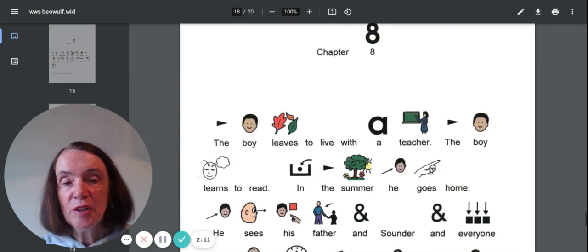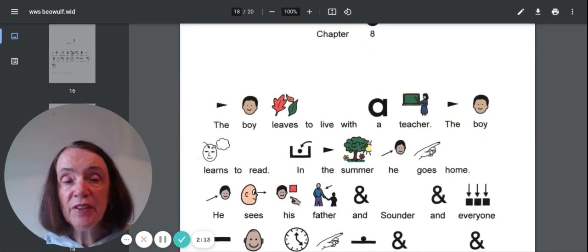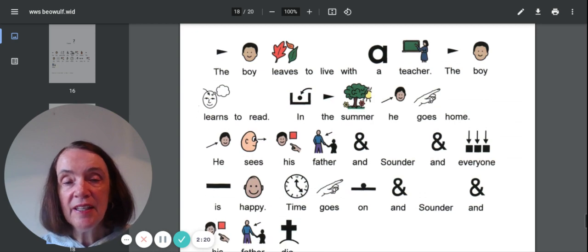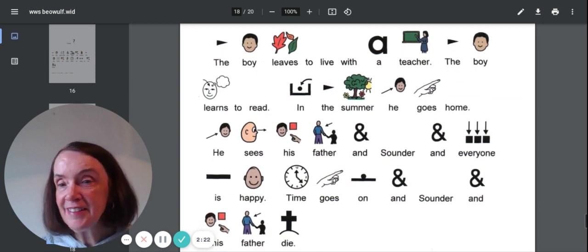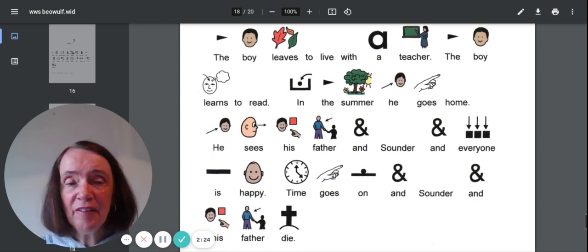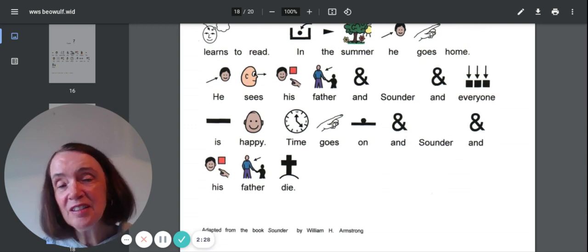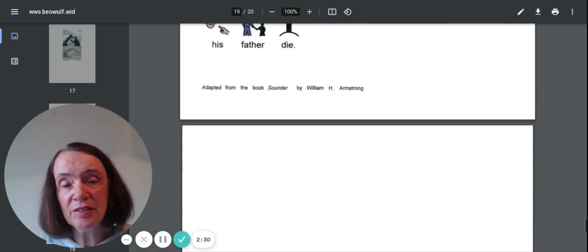Chapter eight. The boy leaves to live with a teacher. The boy learns to read. Yay. In the summer, he goes home. He sees his father and Sounder the dog and everyone is happy. Time goes on and Sounder and his father die. Oh, so sad.